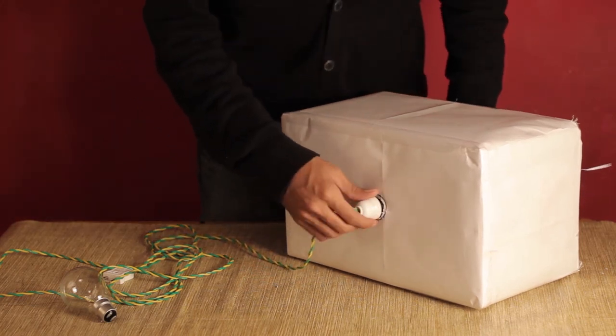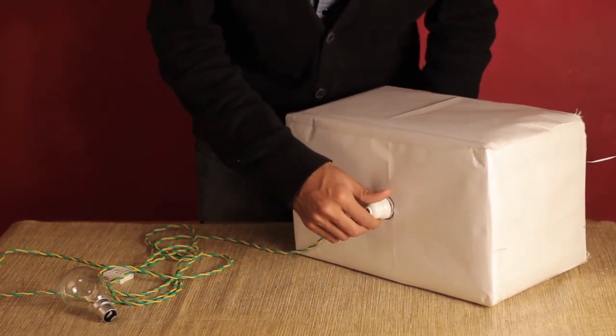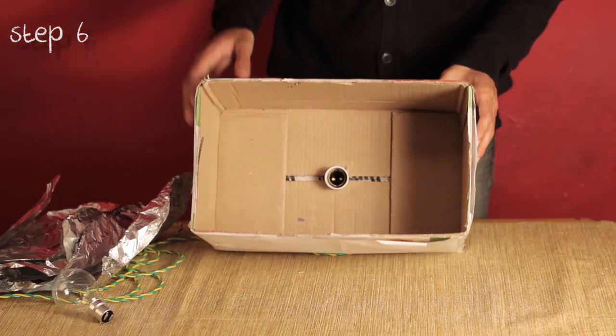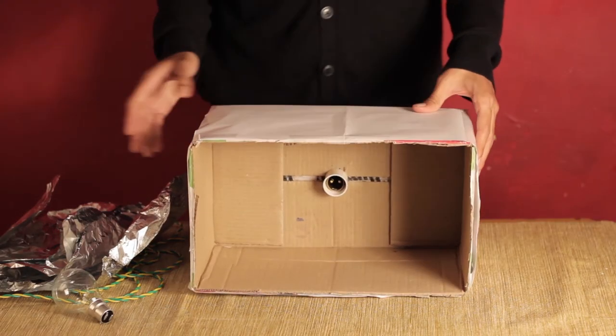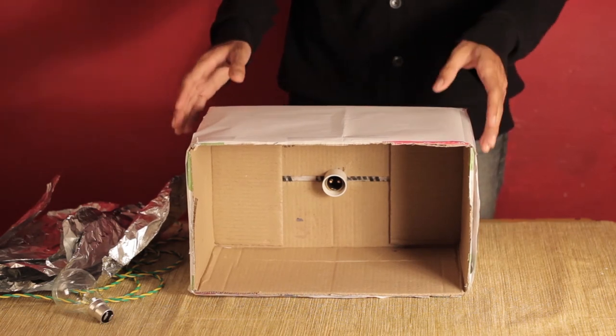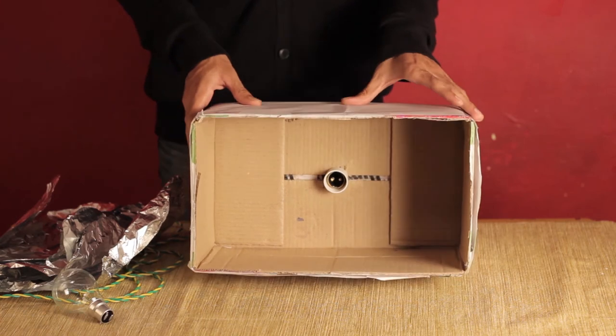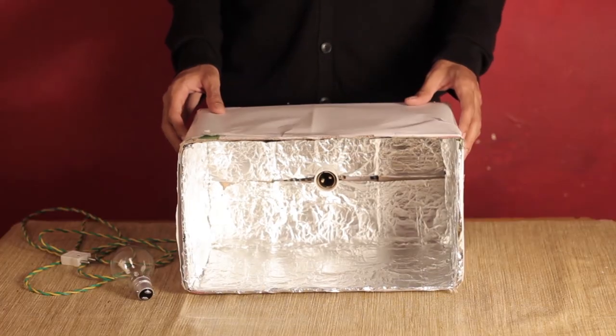Once we have the bulb holder in place, stick the inside walls of the box with aluminum foil. Here, the aluminum foil will reflect the light from the bulb and increase the overall brightness of the softbox.